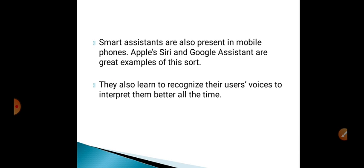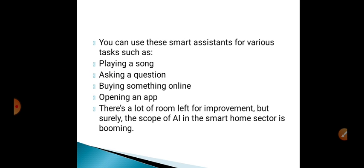Smart assistants are also present in mobile phones. Apple's Siri and Google Assistant are great examples — they recognize their users' voices and interpret them better over time. You can use these smart assistants for various tasks such as playing music, asking questions, buying something online, or opening an app. There is a lot of room left for improvement, but the scope of AI in the smart home sector is booming.